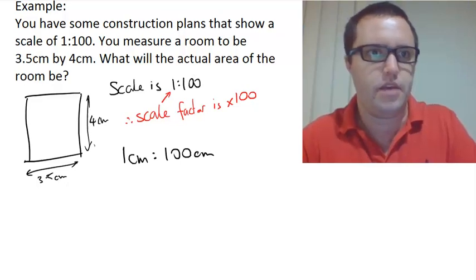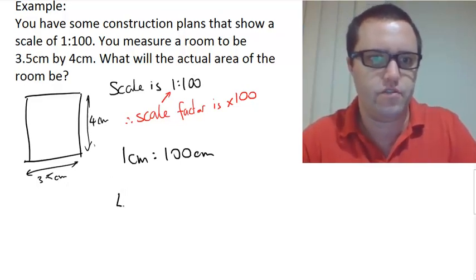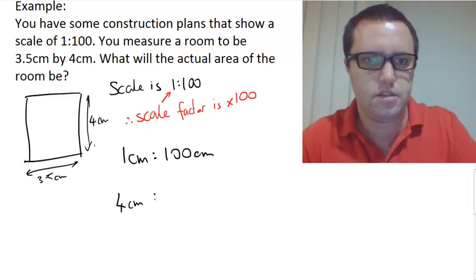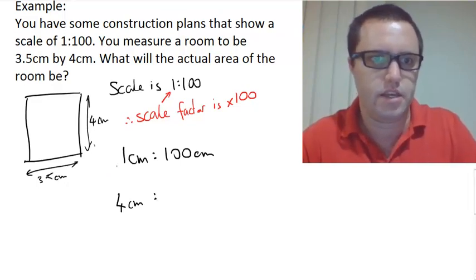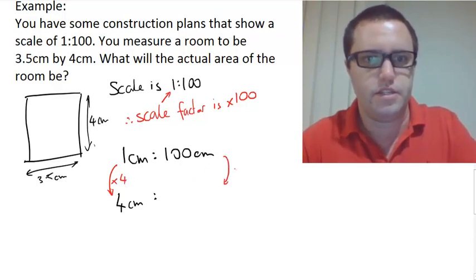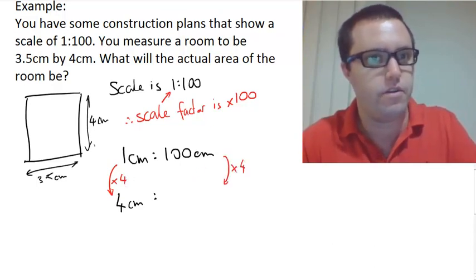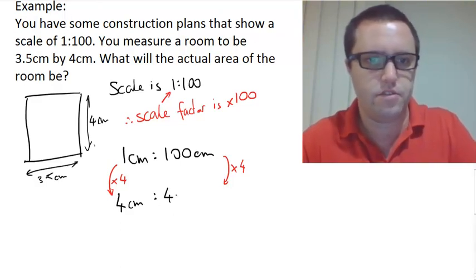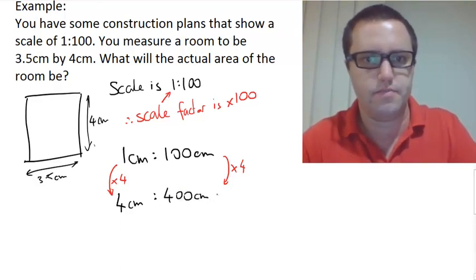1 is to 100. We have measured 4 centimeters to get from here to here. We have multiplied by 4, therefore we need to multiply by 4. So 4 centimeters is to 400 centimeters.